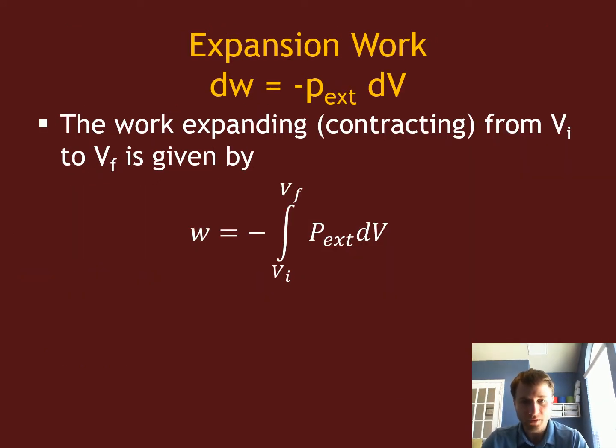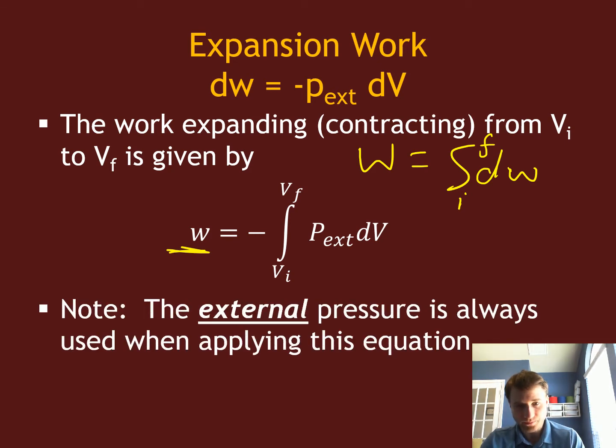We're going to figure out what the total work that's being done is by integrating this infinitesimal amount of work. That work is related with the integral of dw from some initial to final state. We're going to use this to calculate the total amount of work done through a variety of different ways.